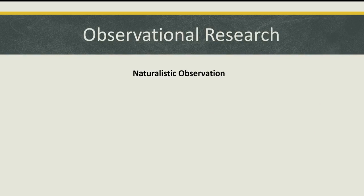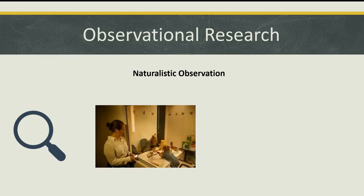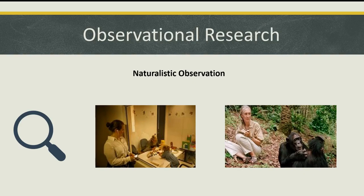Naturalistic observation involves observing natural behavior in an environment where that behavior typically occurs. This could include disguised naturalistic observation, such as a researcher studying children behind a one-way mirror, or undisguised naturalistic observation, such as Jane Goodall, a famous primatologist who studied chimpanzee behavior in the wild. This method is useful to observe people and animals in their naturally occurring behavior. However, when people or animals know they're being watched, they may change their natural behavior, which is one weakness of naturalistic observation.